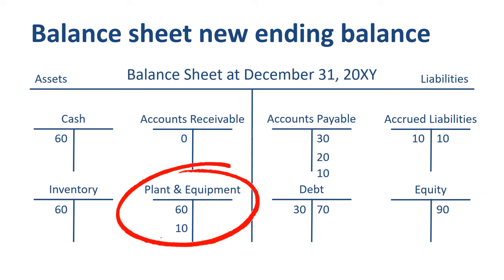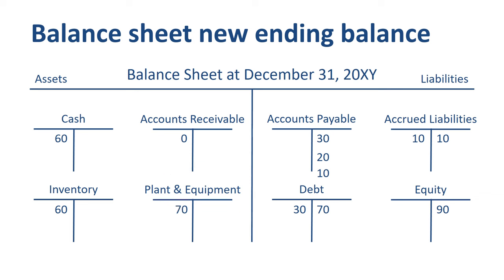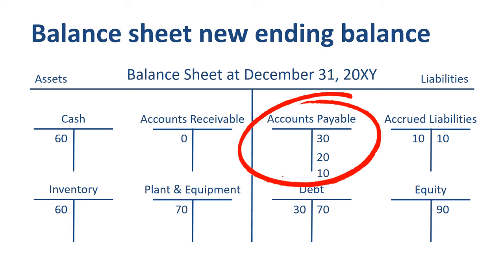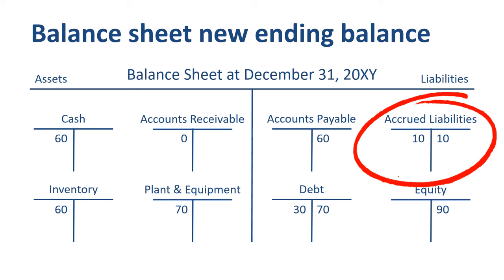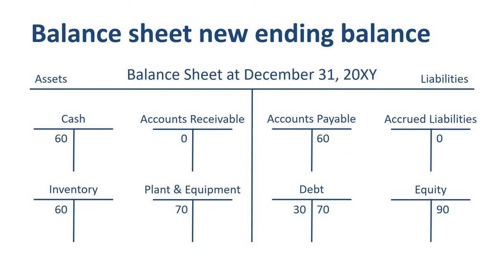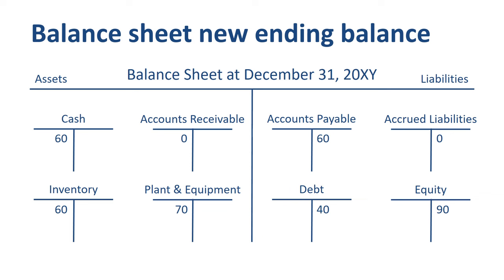In plant and equipment, we started with 60 and added 10 in new equipment for an ending balance of 70. In accounts payable, we had an opening credit balance of 30, which was further increased by 30 to end at 60. Accrued liabilities started with 10, and this amount was reclassed to accounts payable when we received the invoice, so we end with a credit balance of 0. In debt, we started with a credit balance of 70, paid down 30 of our outstanding balance, so we end with an outstanding liability of 40. Equity wasn't touched by any of the transactions in the example, so it stays equal to the opening balance of 90.